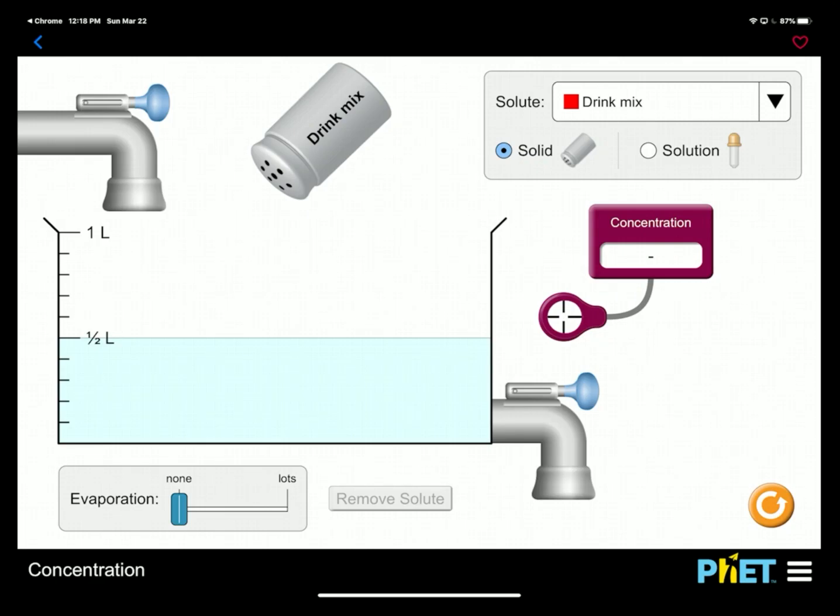All right folks, let's continue with our Chapter 6 discussions. Today we're going to start our thoughts on concentration and we're going to move quickly into the one concentration unit we use the most in chemistry, which is molarity.